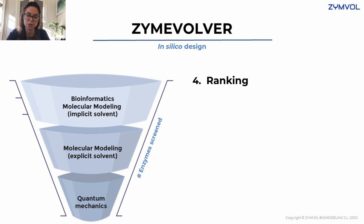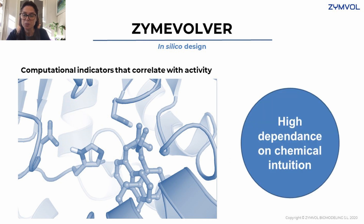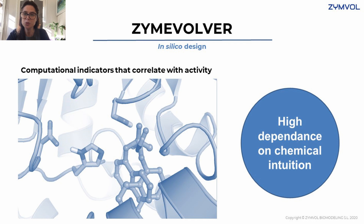We have been able to do this in silico enzyme engineering for many properties — improving activity, selectivity, and specificity. We have even been able to invert the standard reaction, basically changing the thermodynamic equilibrium. In every situation, we're understanding what is happening in the active site and what we need to improve to achieve the engineering goal. We're always looking for computational indicators correlated with activity. One current limitation is that we depend on chemical intuition — we need a good starting hypothesis. What we're working on today is removing part of this human dependence and having data work for us.